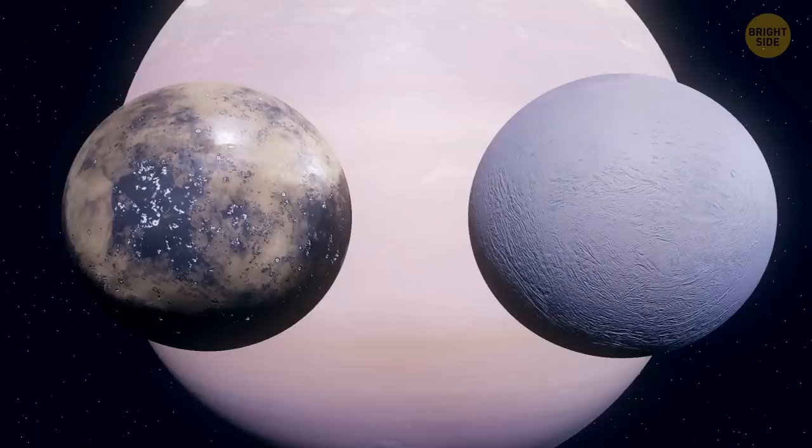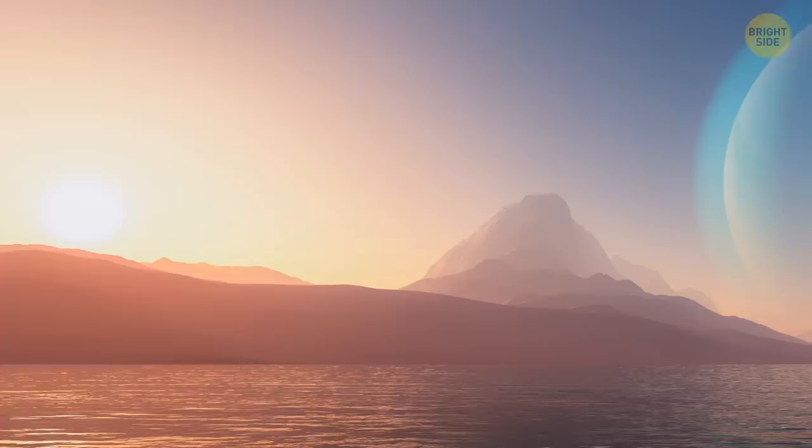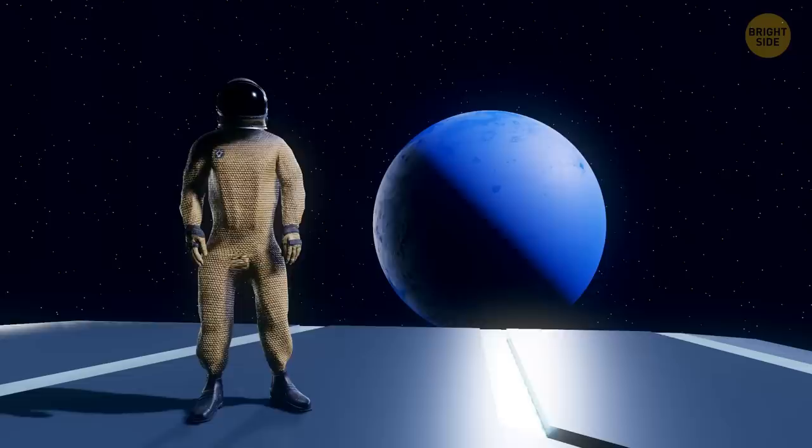Not planets, of course, but moons. Jupiter has Ganymede and Callisto, and Saturn has Titan and Enceladus. The ocean can reach up to 30 percent of the mass of these moons. Although it isn't clear whether these oceans are covered with a thick crust of ice.